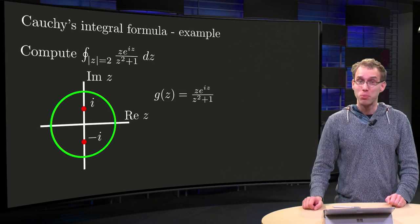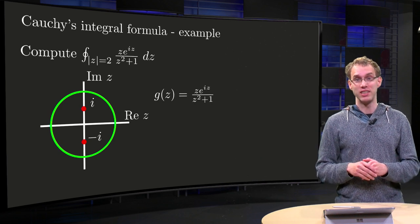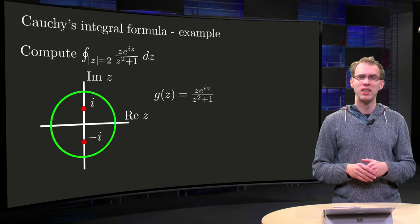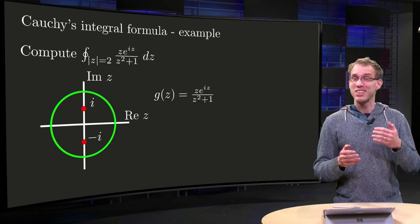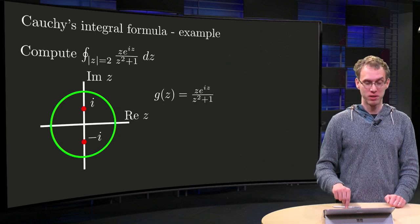Cauchy's integral formula allows us to compute integrals, but only if only one singularity is inside your contour C. So what can you do if we have more singularities? Well, in that case we sometimes can still use a formula, but we have to be a bit careful, as you will see in the example in this video.